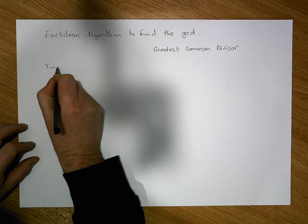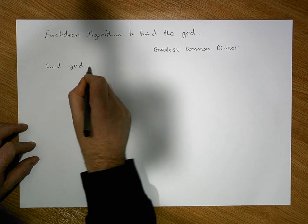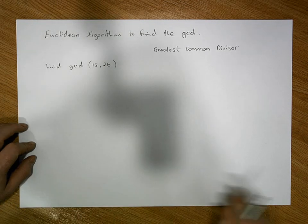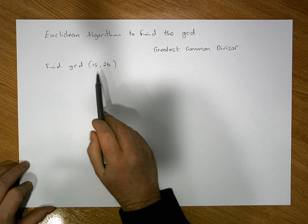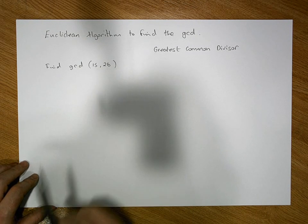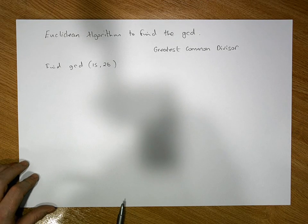What I'd like to do is find the GCD of, let's say, 15 and 26. So we'd like to find the largest number that divides into 15 and also divides into 26.